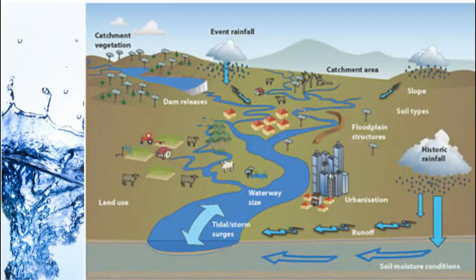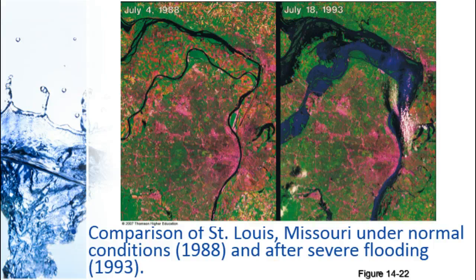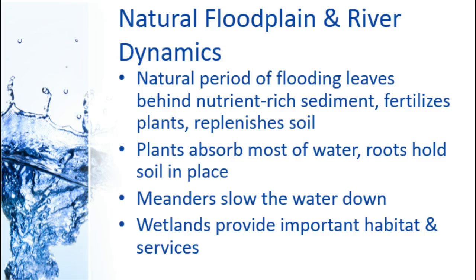There are lots of things that affect how much flooding you're going to get, and a lot of them have to do with human impacts on the area. This is an example of severe flooding in St. Louis, Missouri — the normal conditions and then during the flood — and you can see how much that river has really overflowed. In a natural floodplain and river system, periods of flooding are actually good for the ecosystem because they bring nutrients out from the river into the soil, replenishing nitrogen and phosphorus used by plants.